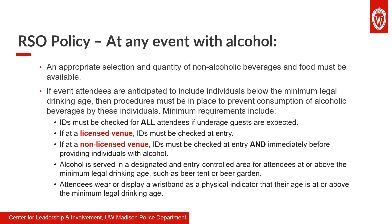At any RSO event with alcohol, organizations must ensure that guests are provided with both food and non-alcoholic beverages as an alternative option. If an event has individuals present that are under the minimum legal drinking age, then procedures must be put in place to prevent consumption of alcohol by these individuals. The minimum procedures include: IDs must be checked for all attendees if underage guests are expected. If at a licensed venue, IDs must be checked at entry. If at a non-licensed venue, IDs must be checked at entry and immediately before providing individuals with alcohol. This is to combat giving wristbands to underage friends, such as at a house party. Alcohol is served in a designated and entry-controlled area for attendees at or above the legal minimum drinking age, such as a beer tent or beer garden. Attendees must wear or display a wristband as a physical indicator of their age.